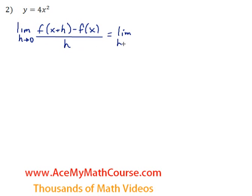We need to find the limit as h approaches 0 of f of x plus h. Now what is f of x plus h? We're just going to need to plug in the x plus h in for x, which is going to be 4 times x plus h squared. So this is just f of x plus h.